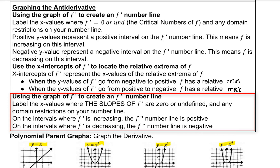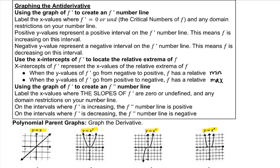Using the graph of f prime to create an f prime prime number line: label the x values where the slopes of f prime are 0 or undefined, and any domain restrictions, on your number line. On the intervals where f prime is increasing, the f prime prime number line is positive. On the intervals where f prime is decreasing, the f prime prime number line is negative. That's a lot of information up front, but it will be very helpful when you are graphing the derivative and antiderivative.